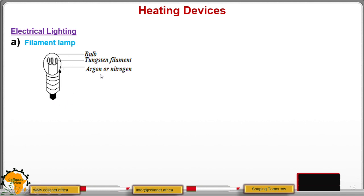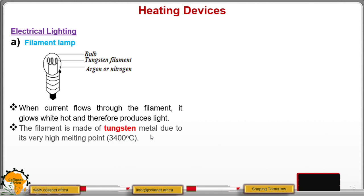It has a bulb. Inside the bulb we have a gas that is argon or nitrogen. Then we have the tungsten filament. What happens is that when the current flows through the filament, this filament glows quite hot. And when it glows quite hot, it therefore produces light energy or it converts that electrical energy to light energy.